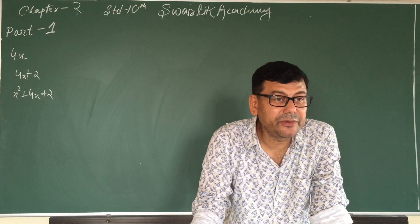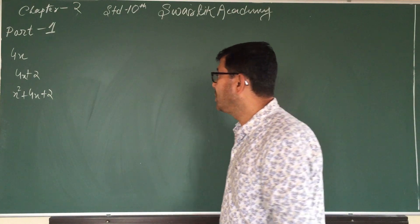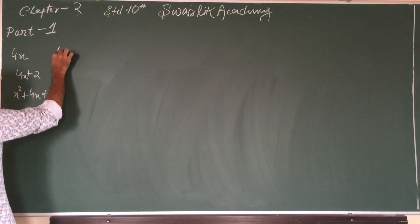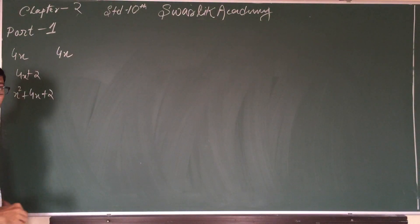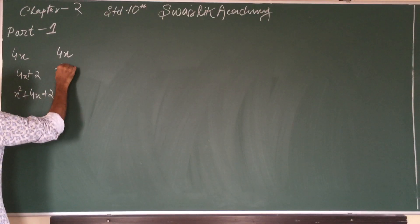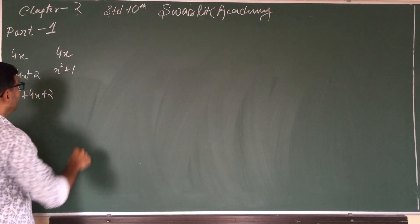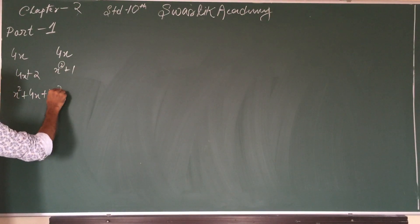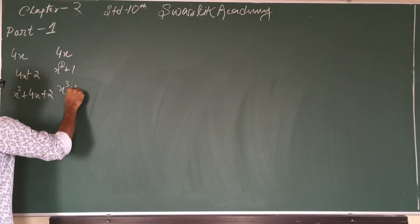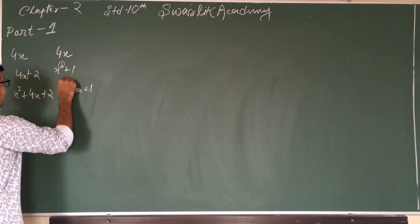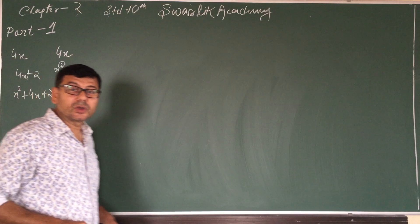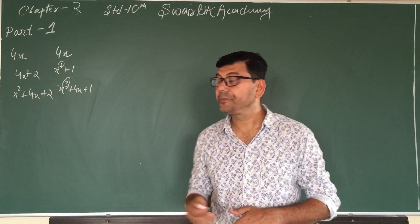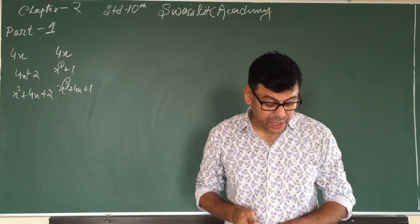So these are the three different types. We can also get examples of all these. Just for example, 4x is a linear polynomial. Suppose x² + 1 is a quadratic polynomial because we have power two. And if it is x³ + 4x + 1, the power is three, so we consider it our cubic polynomial.